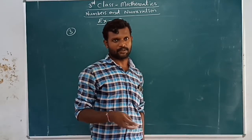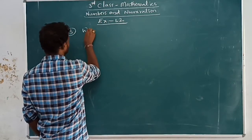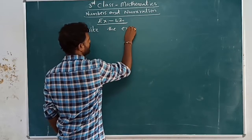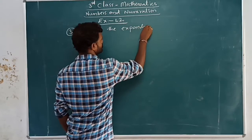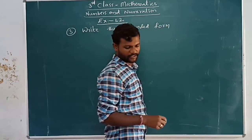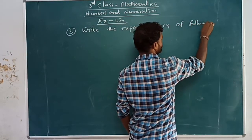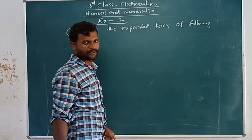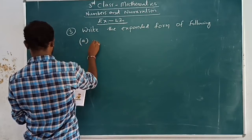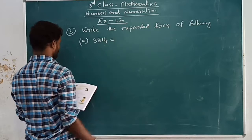Now, third bit from Exercise 1.2. I have already explained how to write the expanded form, so that is the third bit. Write the expanded form of the following. The first one is done for us. Problem A is 3814.